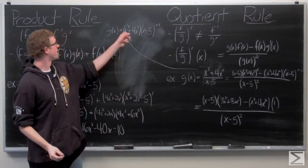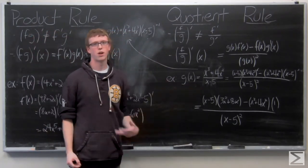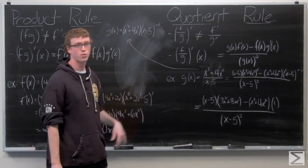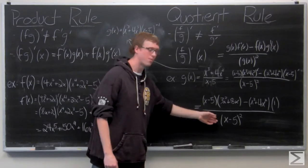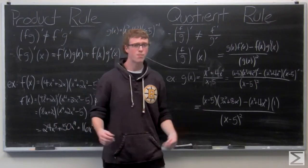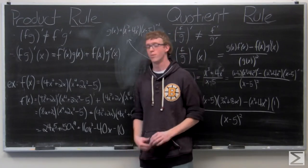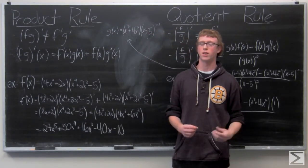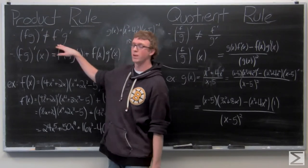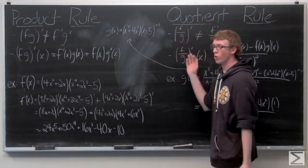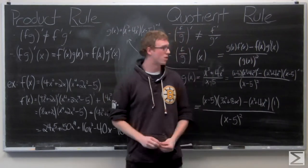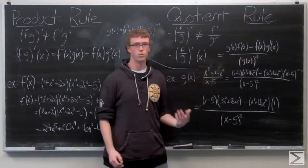Those two functions — the result from the product rule and the result from the quotient rule — are equivalent. I'll leave it as another exercise for you to use the product rule and see if you can come up with the same answer. In closing, the most important thing to remember is that (fg)' does not equal f'g', and (f/g)' does not equal f' over g'. Make sure that you're using the proper product and quotient rules.